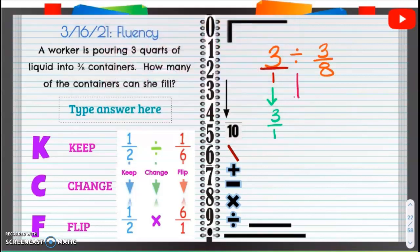And then we're going to change the sign for the next one. So the division becomes a multiplication. And then we're going to flip that last fraction and we're going to have eight over three.